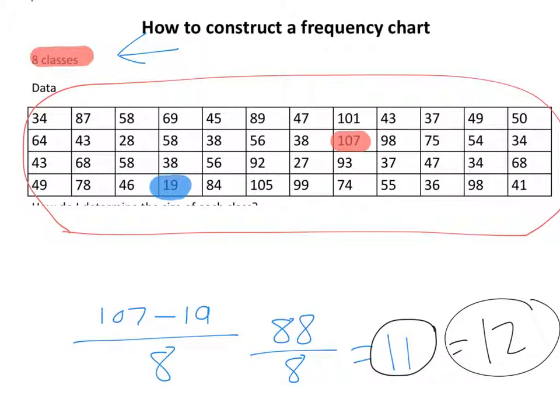Now if I had gotten a decimal, say I got 8.2, I would round that up to the next whole number, which would be 9. Say I got 10.7. The next whole number would be 11. Always round up to the next highest whole number. So in this case we got 12, so our class width is 12 right here.